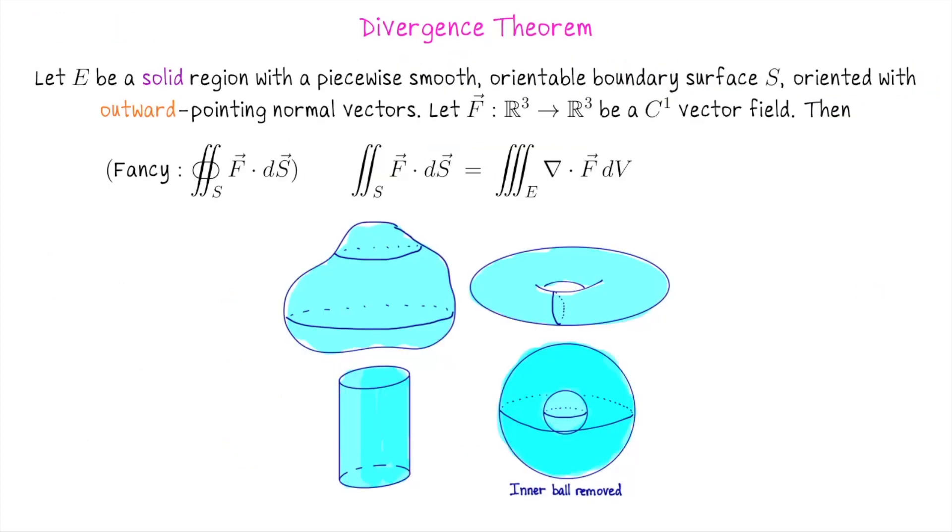Now we can state the divergence theorem. Let E be a solid region in R3 with a piecewise smooth orientable boundary surface S oriented with outward pointing normal vectors. Let F be a vector field in R3, which is a nice continuously differentiable vector field. The flux of F across the boundary surface S enclosing the solid region E is equal to the triple integral of the divergence of F over E.